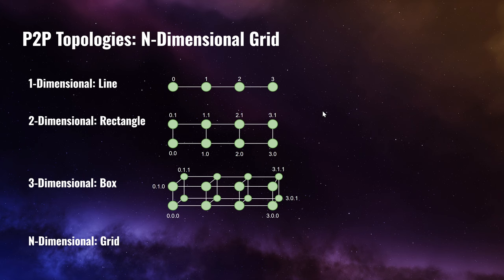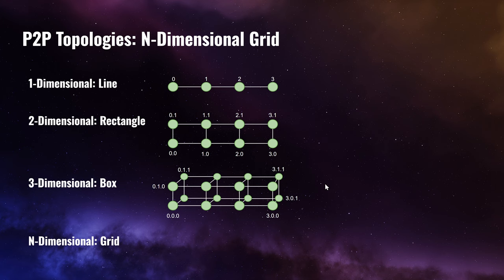As the grid grows, with 256 peers, the line would require on average 128 hops, whereas a 16x16 grid would require at most 32 hops and on average only about 16 hops. The more dimensions you add, the more resilience against network partitioning you gain, and the more efficient the routing becomes because there are shorter paths between any two nodes. However, this is not the most efficient way to structure a peer-to-peer network — it's just one possibility worth knowing about.